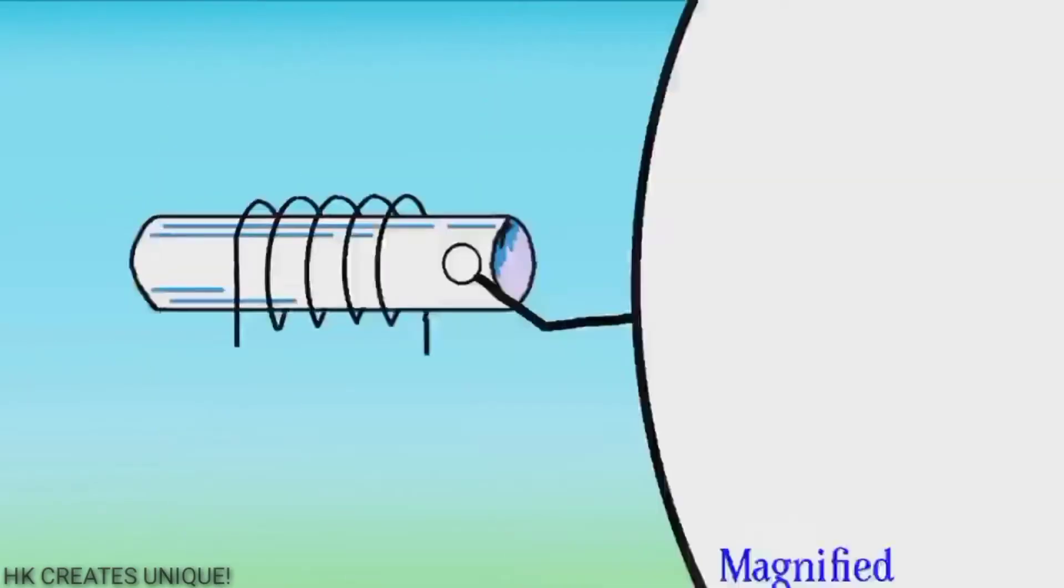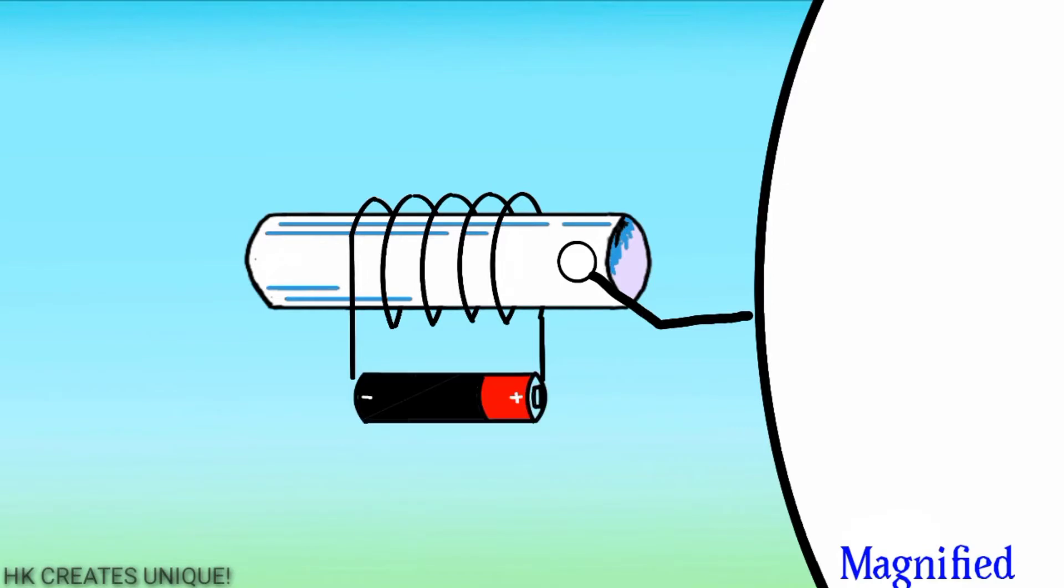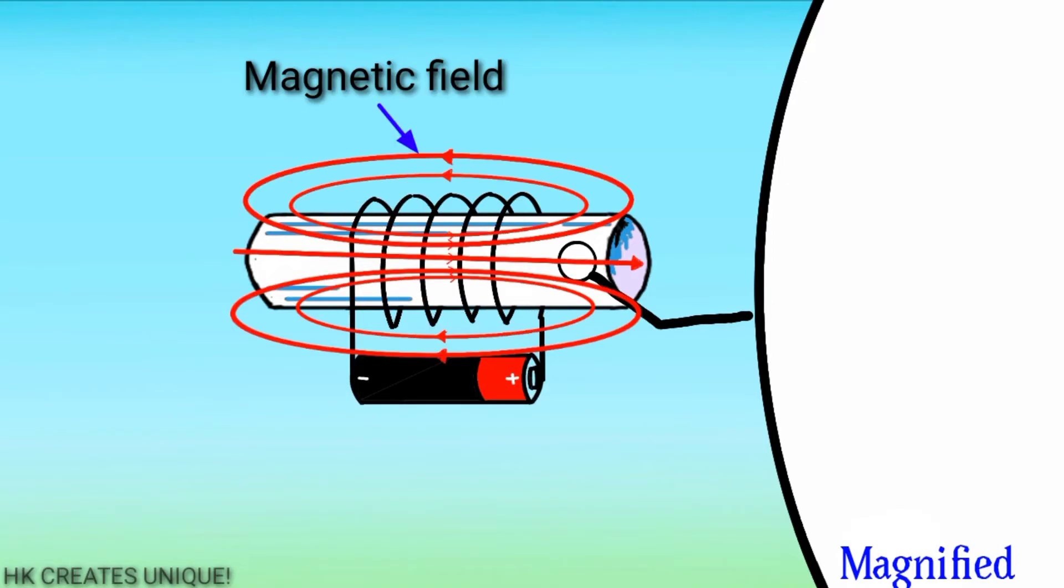These magnetic regions are known as domains. The overall magnetic field is zero because it is pointing in random directions. However, when you power up the electromagnet, it creates a magnetic field. The magnetic fields align the domains like this.